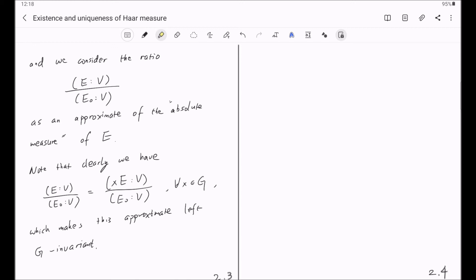Now, do you understand why we call this an approximate of the absolute measure? The reason is that we are going to define the absolute measure by taking the limit of this in some way. And do you see how we are going to take the limit?